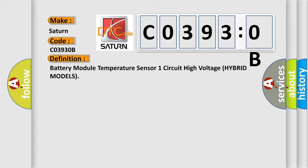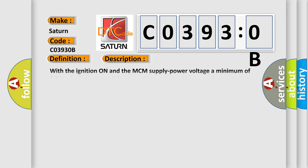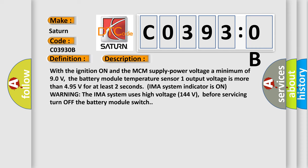And now this is a short description of this DTC code. With the ignition on and the MCM supply power voltage a minimum of 90 volts, the battery module temperature sensor one output voltage is more than 4.95 volts for at least two seconds. IMA system indicator is on warning. The IMA system uses high voltage 144 volts, so before servicing, turn off the battery module switch.